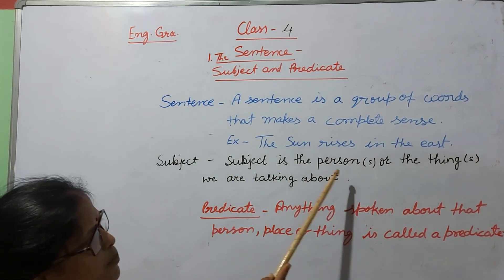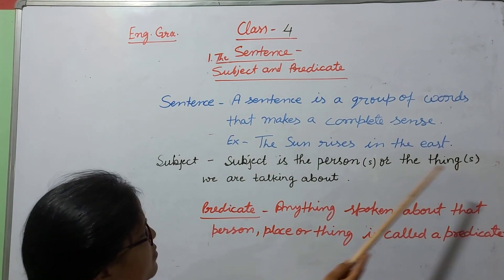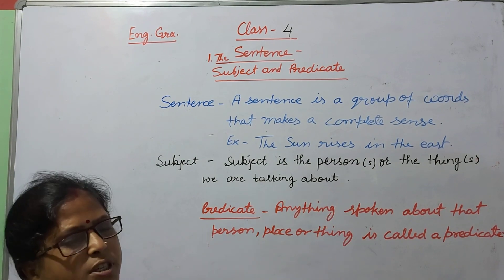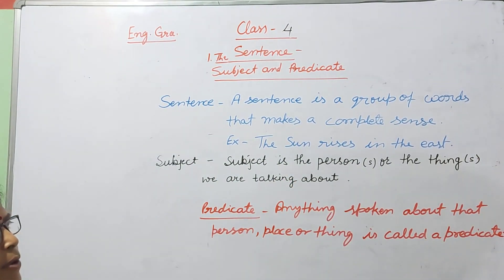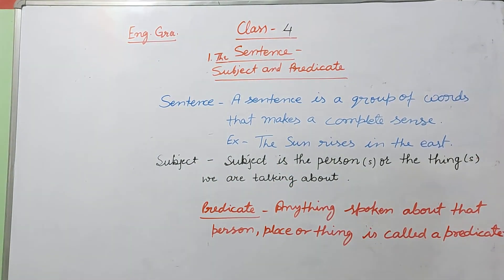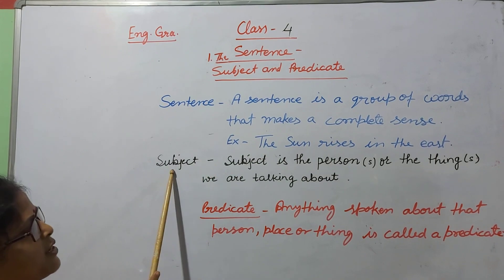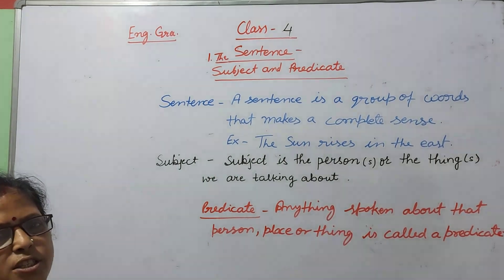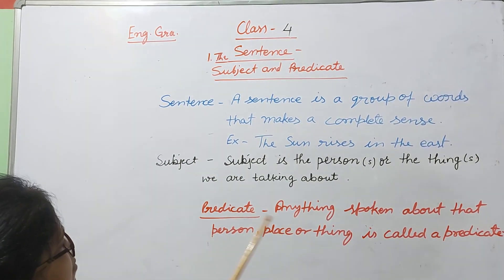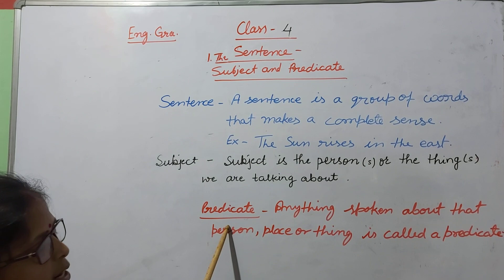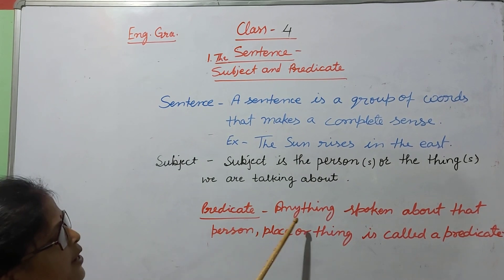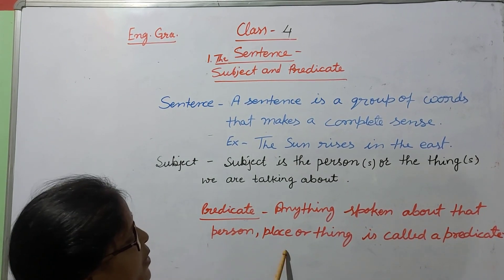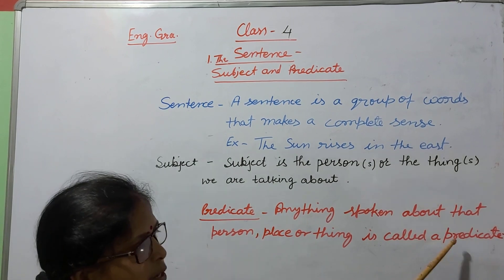A sentence has two parts: subject and predicate. Subject is the person or thing we are talking about. Anything spoken about that person, place, or thing is called a predicate.